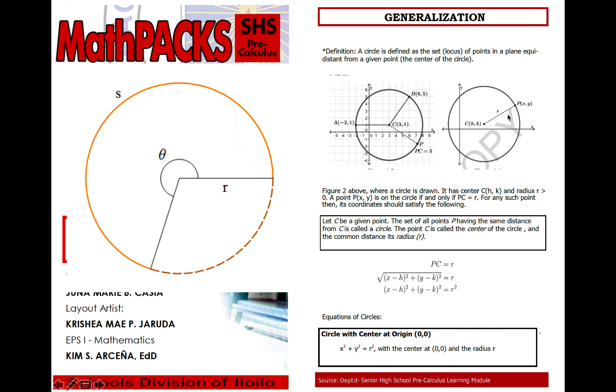So in your basic algebra, the distance has length. So if you have two points, you can actually get the length of the segment joining the two points. So this actually came from the distance formula. Let C be a given point. So determine a point on the Cartesian plane. So if you want to plot a point on the Cartesian plane, then locate points P having the same distance from C.